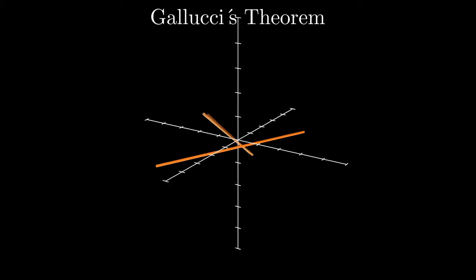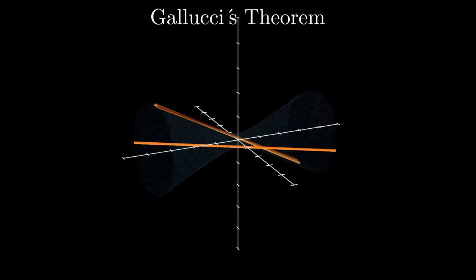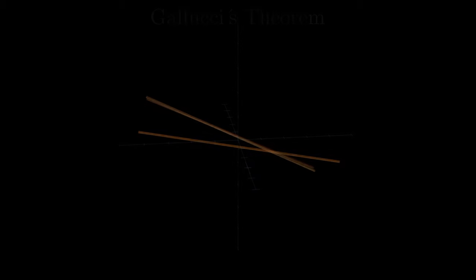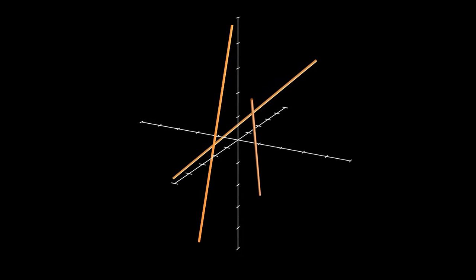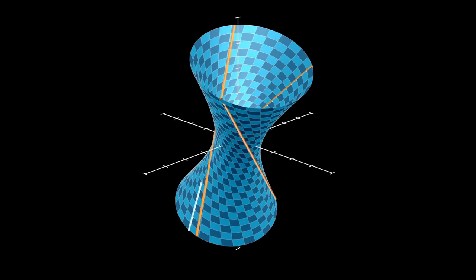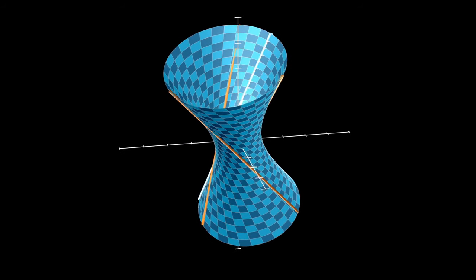Let's see how our new theorem answers the question of how many lines intersect three given skew lines. Let's create three random lines and draw the hyperboloid that contains all of them. Remember that Gallucci's theorem says that they all lay on one of the two rulings of the hyperboloid.